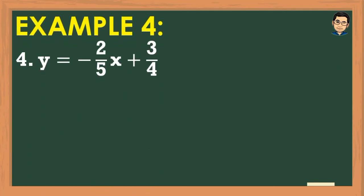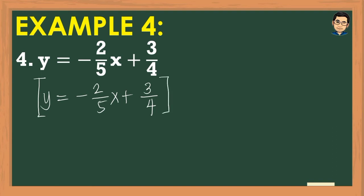For example number 4, y = -⅖x + ¾. The denominators are different here — 5 and 4 — so the LCD of 5 and 4 is 20. We rewrite the given equation y = -⅖x + ¾, then multiply the whole equation by the LCD, which is 20. So y × 20 = 20y, and (-⅖x)(20): since 20 and 5 have a common factor of 5, we cancel to get (-2)(4) = -8x.